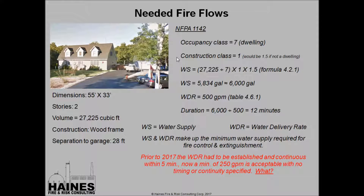NFPA 1142 is a little more difficult to use because you need a copy of the document. You're going to need to look up the occupancy class, which is a 7 for a dwelling, and the construction class, which is a 1 for wood frame construction. Interestingly, if the building were an office building, you'd be using a construction factor of 1.5.